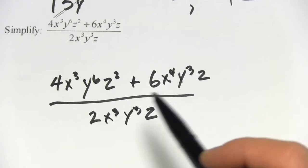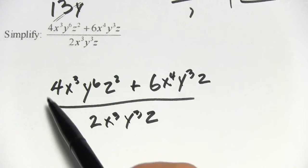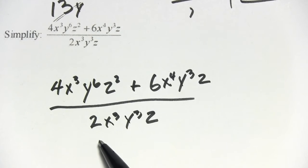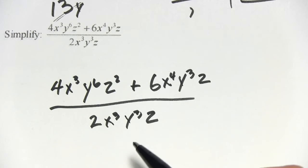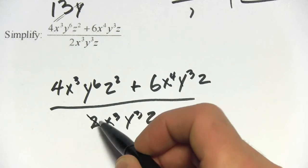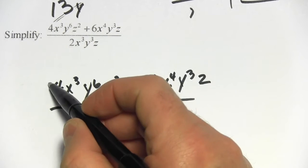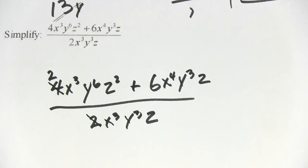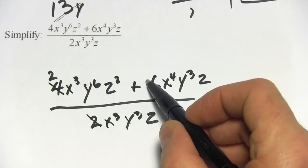So let's see, first of all let's look at the number. On the top we have 4 and 6 and on the bottom we have 2. Both of those are divisible by 2 so we can go ahead and cancel this 2. 4 divided by 2 is 2, 6 divided by 2 is 3.